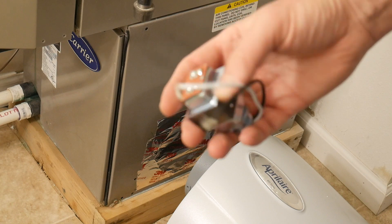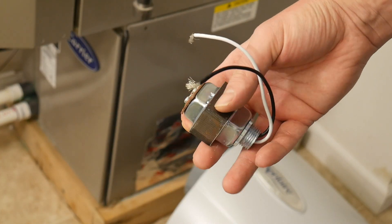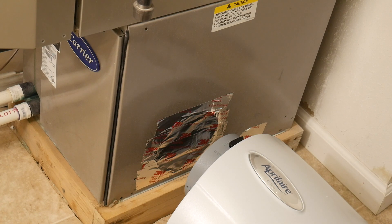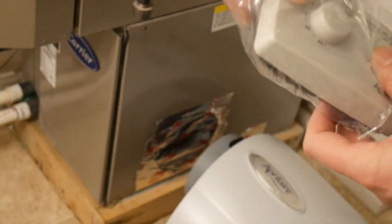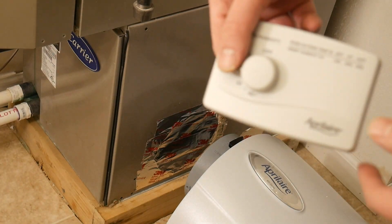It is not a professional installation so bear with me. This is the transformer for the 24 volt power because that is what it uses. And this is the humidistat where you control the humidity manually.